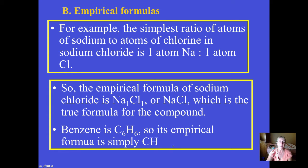Benzene is an example of a compound that's organic — six carbons to six hydrogens. You can reduce a six-to-six ratio down to a one-to-one ratio. So while the molecular formula of benzene is C₆H₆, its empirical formula is simply CH.